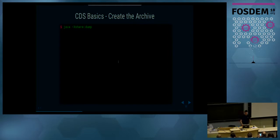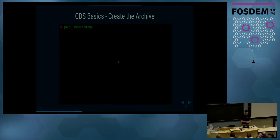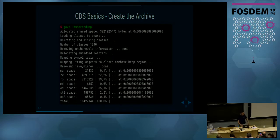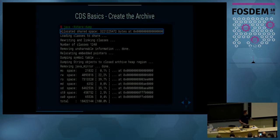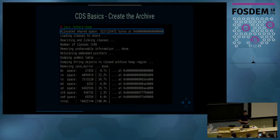How does CDS work? Before we can use class data sharing in the Hotspot VM, we first have to create the shared archive. This is an offline step — and also one of the problems of the CDS implementation in Hotspot, which I'll discuss at the end. By just calling java -Xshare:dump, a lot of stuff happens. The VM allocates space at a fixed address where the shared archive will be mapped into memory. Every instance of the Hotspot will map the shared archive at the same memory address — configurable via command line, but generally it's 32 gigabytes.